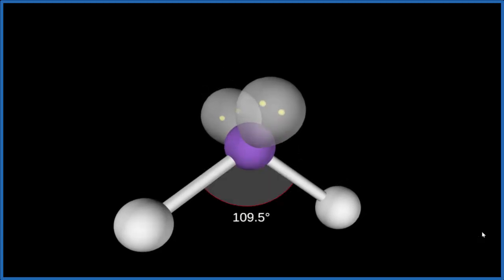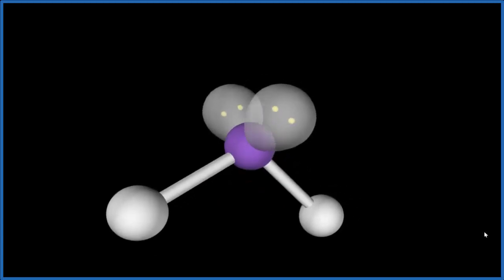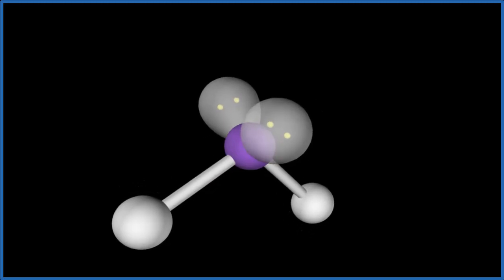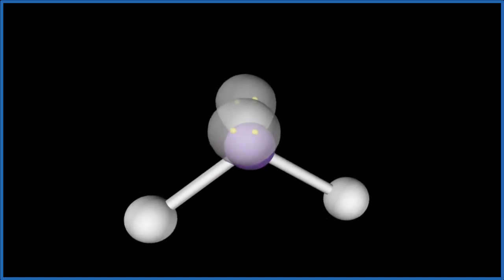The bond angles, the ideal bond angles are 109.5. But because the lone pairs are more repulsive than the atoms, we would expect it would push this down and these would be closer together. So we have a bent molecular geometry. But if we look at the electron geometry, that takes into account the atoms here and these electron pairs, we'll actually have a tetrahedral electron geometry.